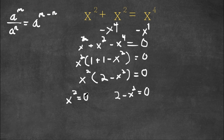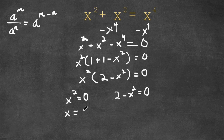Now for x squared equals 0, this is simple. The only number that squared equals 0 is simply just 0. So for this, we have x is equal to 0. That is one solution.